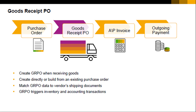Unlike a PO, a goods receipt PO cannot be amended after it has been added to SAP Business One because it triggers both inventory and accounting transactions. Your only option for fixing an incorrect goods receipt PO is to cancel the document and create a new goods receipt PO.